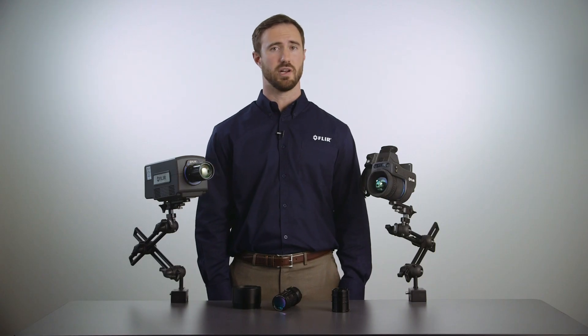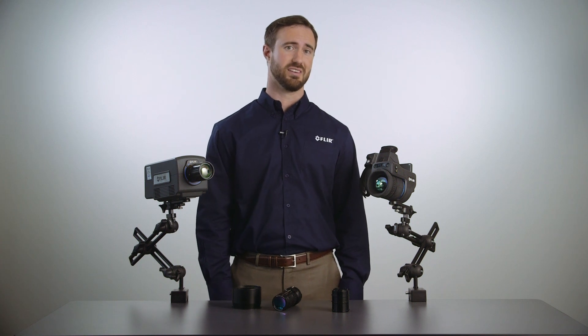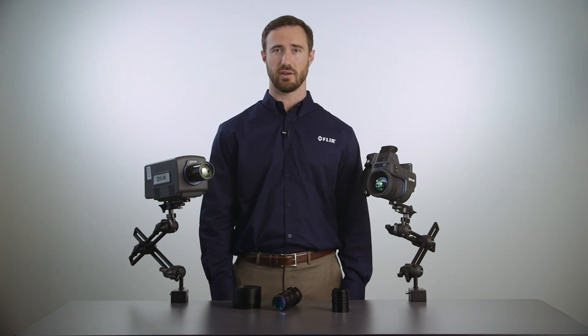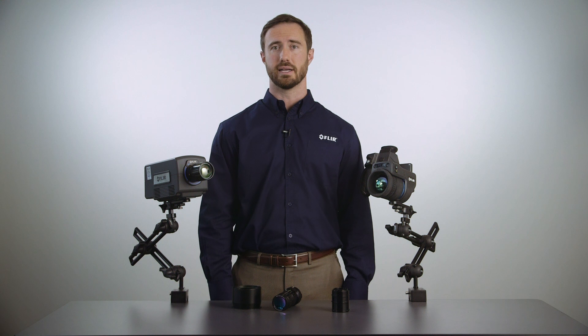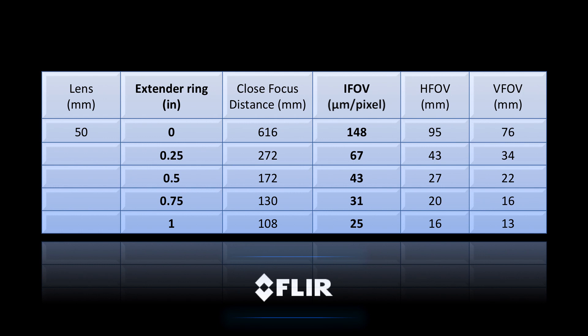One option that is only available for cooled camera systems and not available for uncooled cameras are extension rings. Extension rings are an inexpensive solution for close-up imaging with a standard lens. Shown here are some of the various fields of view available with an A8300SC, a 50mm lens, and various thicknesses of extension rings.